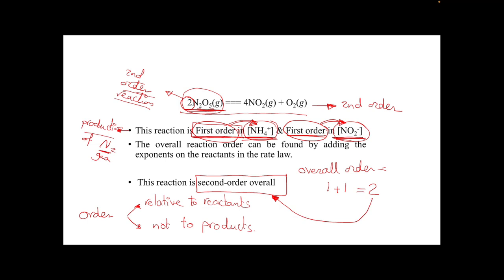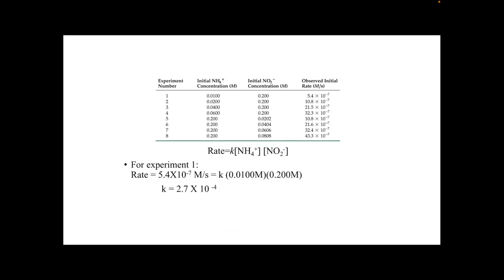Each reaction has two types of orders: an order for each reactant, where each reactant has an order equal to the number of moles appearing in the equation, and an overall order, which is the summation of the orders of all reactants involved in the reaction.